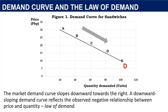The market demand curve slopes downward towards the right. A downward sloping demand curve reflects the observed negative relationship between price and quantity — the law of demand. As the price decreases, the quantity demanded increases, and vice versa. Since the assumption is that price is the only factor that affects quantity demanded, for every price change, there is a movement along the demand curve. When the price of sandwiches falls from 25 pesos to 20 pesos, the number of units demanded rises from 40 to 60 — a movement along the demand curve from point B to C.